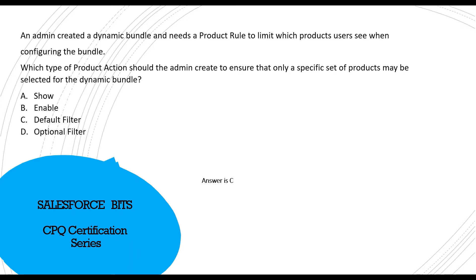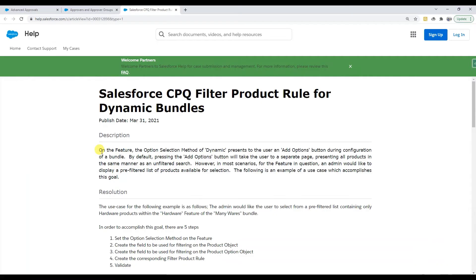I would say the correct answer is C — Default Filter. With this filter you specify, for example, that only a certain product type or product family should appear, which limits the user in a dynamic bundle to select only those products. Let me jump into the reference documentation to show why.